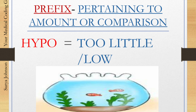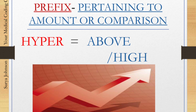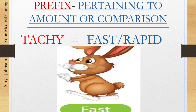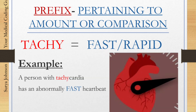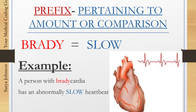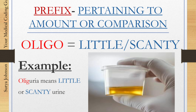Number seven: the prefix 'hypo' also means too little or low. Example: a person with hypotension has low blood pressure. Number eight: 'hyper' is a prefix opposite to hypo — hyper means above or high. A person with hypertension has blood pressure above normal. Number nine: the prefix for fast or rapid is 'tachy.' A person with tachycardia has an abnormally fast heartbeat. The prefix for slow is 'brady.' A person with bradycardia has an abnormally slow heartbeat. Number eleven: the prefix for little or scanty is 'oligo.' Example: oliguria means little or scanty urine.